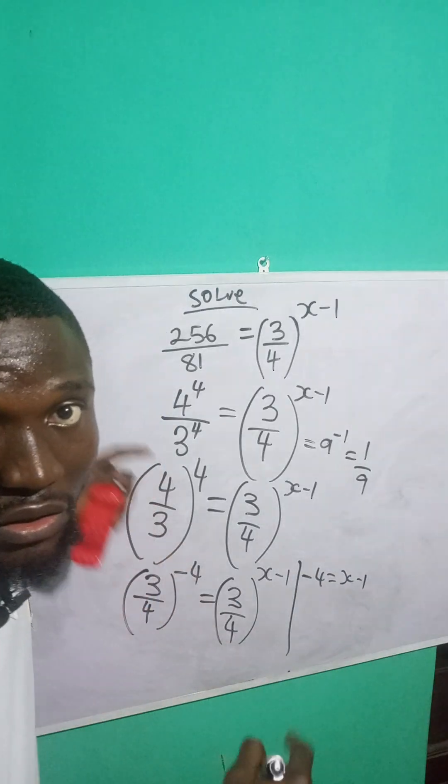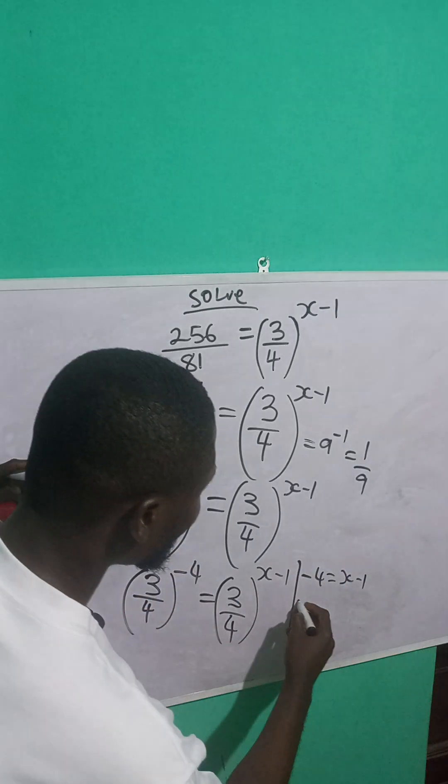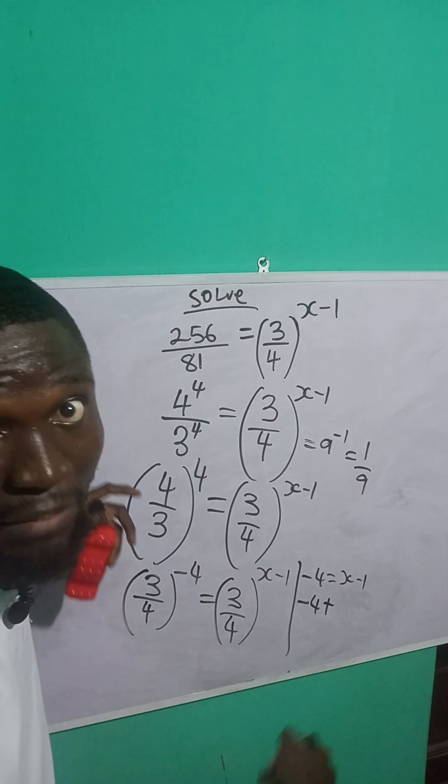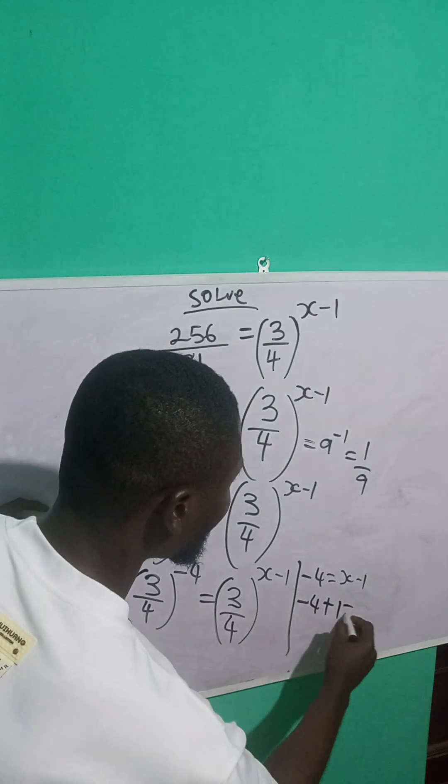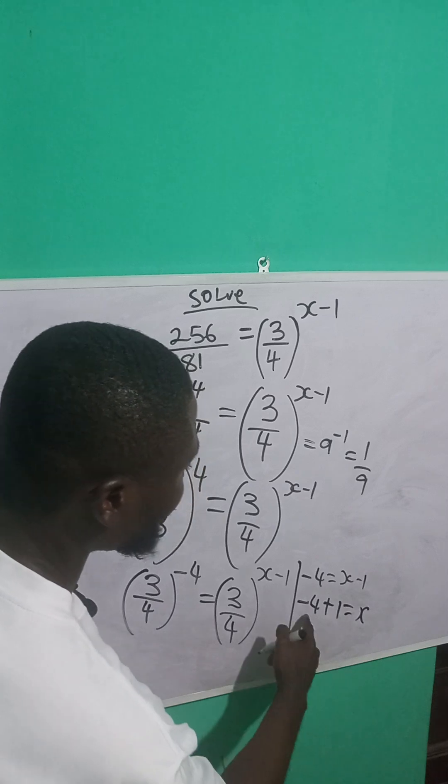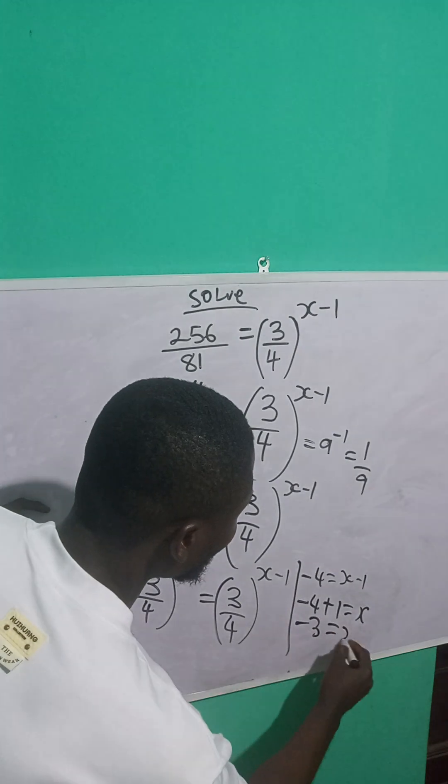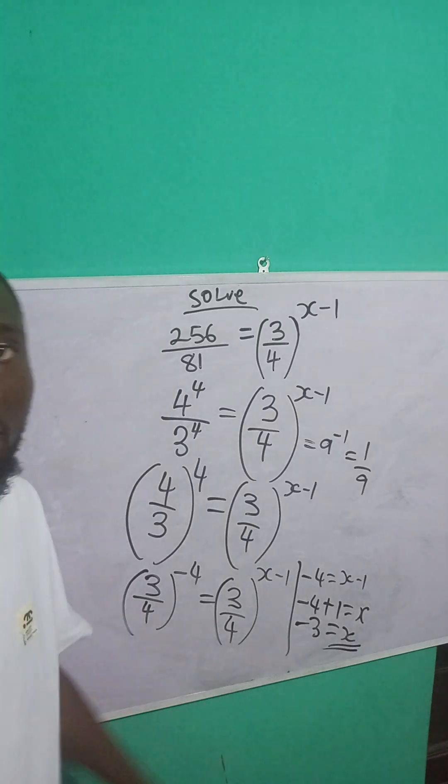I am going to collect like terms and move it to the right hand side, so it becomes minus 1 minus 4. Minus 1 crossing to this side becomes plus 1, so plus 1 is equal to x. Minus 4 plus 1 is what? Minus 3. So minus 3 is equal to x. So this is the value of x.